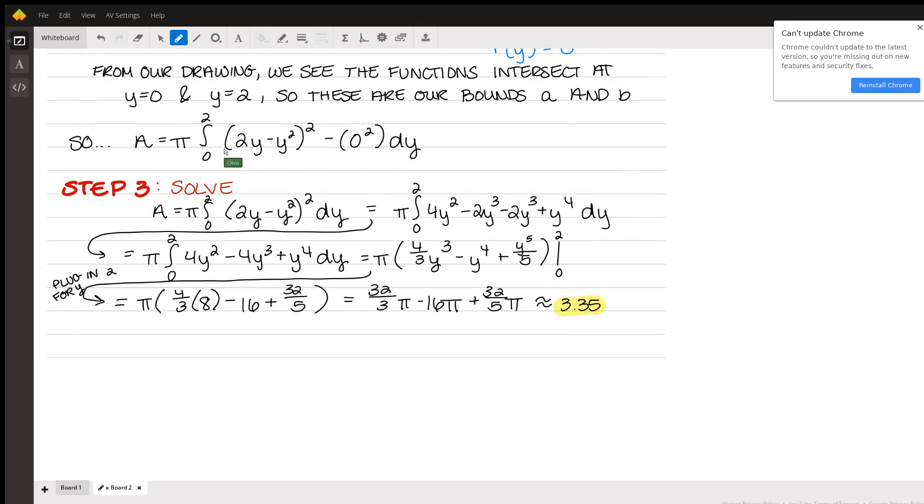So once you plug in all of these values, all you have to do is go forward with simplifying. So I squared this entire quantity. You're going to get this resulting equation right here. And then I just kind of started condensing. So you're going to end up with this equation here. And from there, you can integrate all of these individual variables.